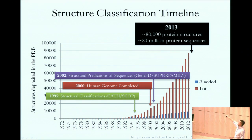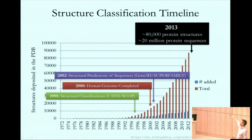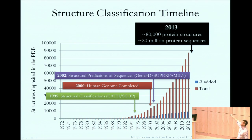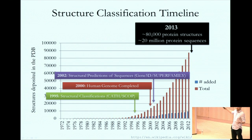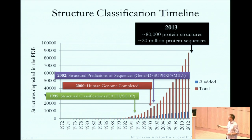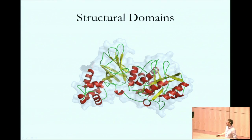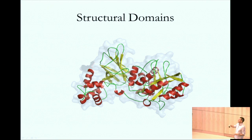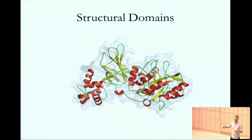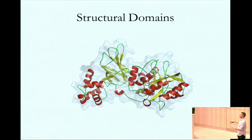Where we are now: there are around 80,000 protein structures in the PDB, and this compares to the 20-million-odd protein sequences. So I'll be talking about the idea of a structural domain, which is very important in terms of the work that we do.